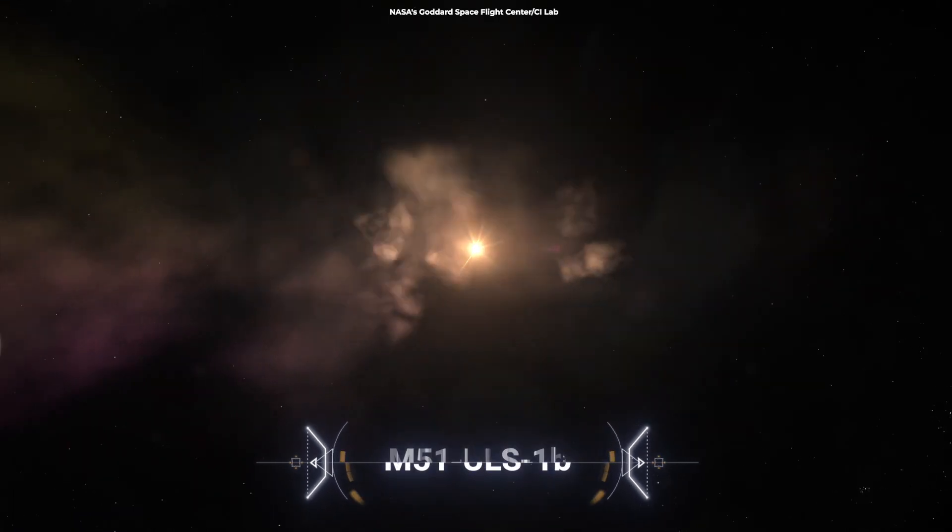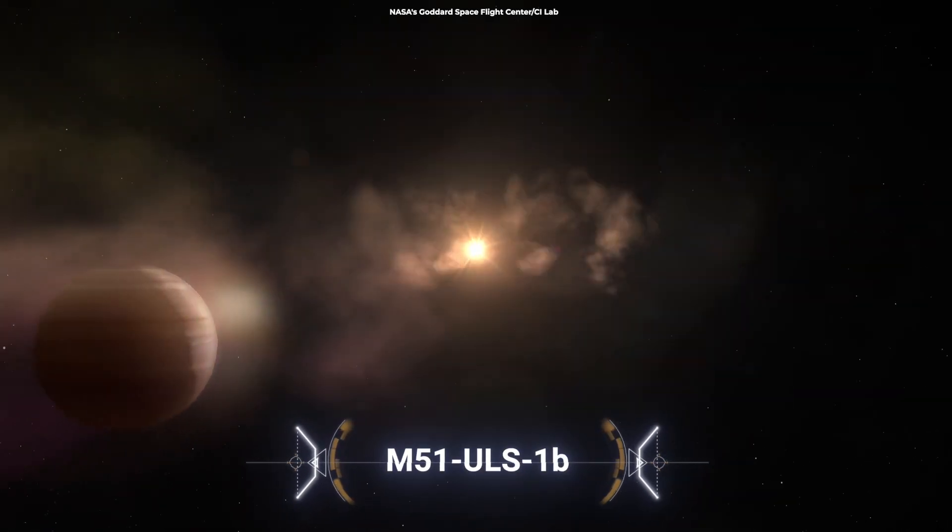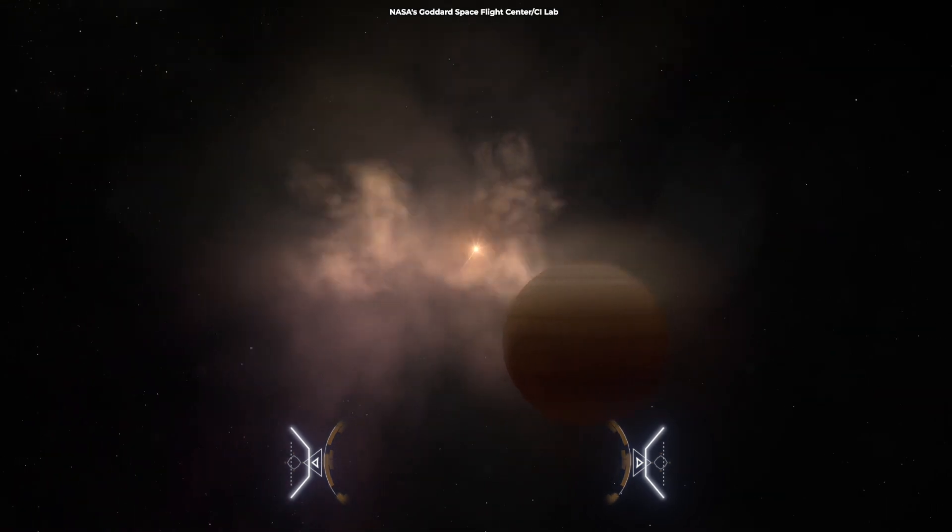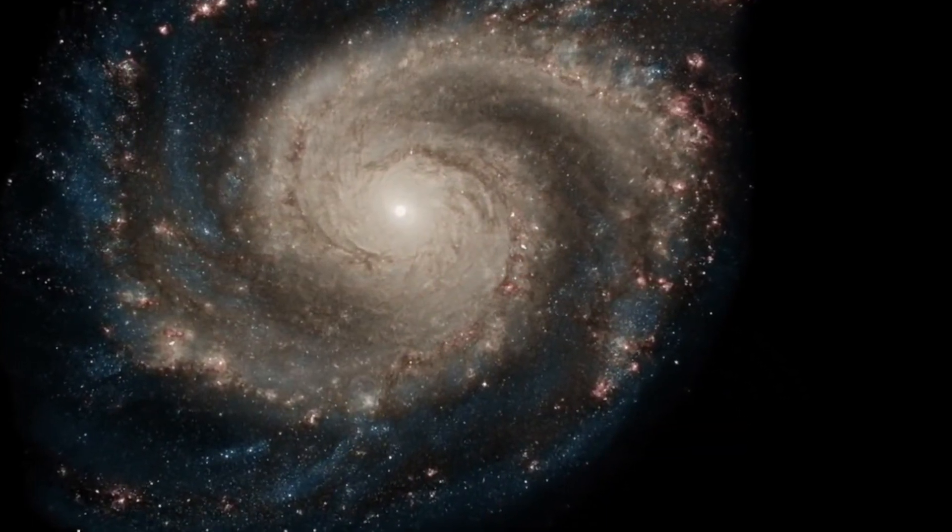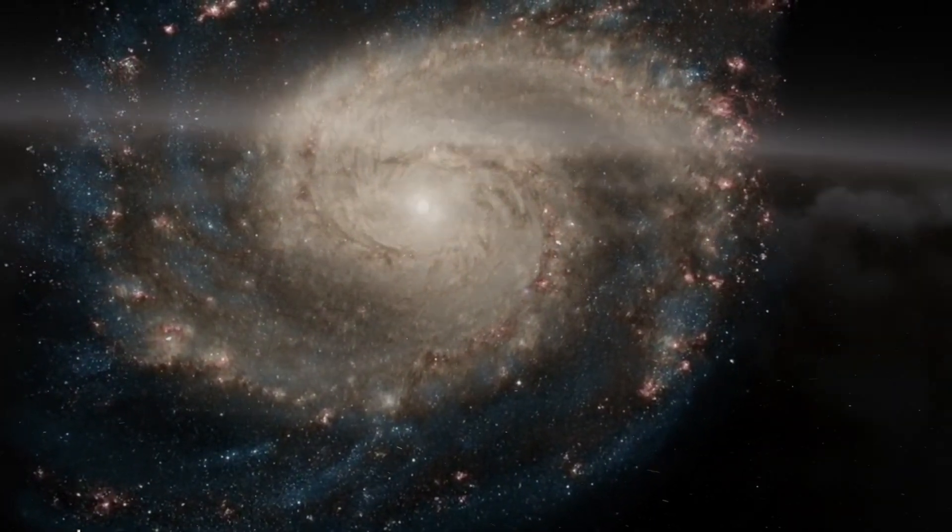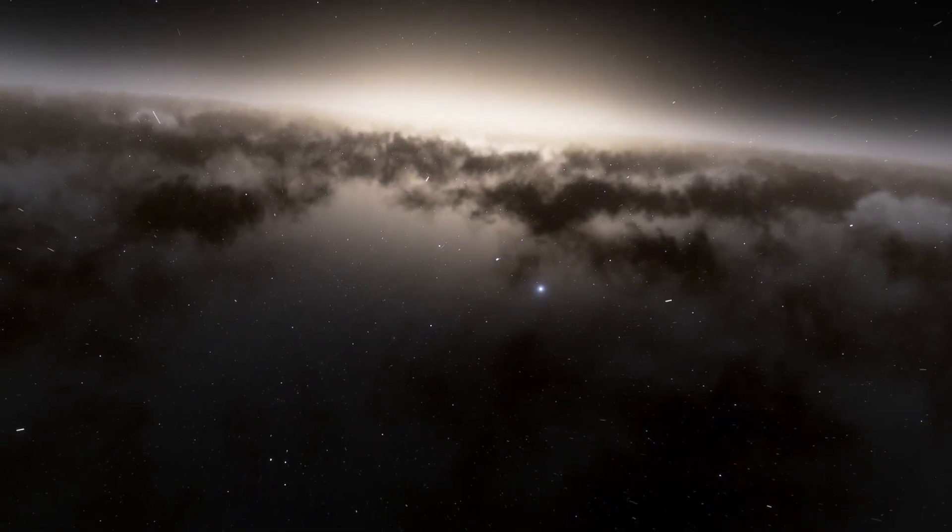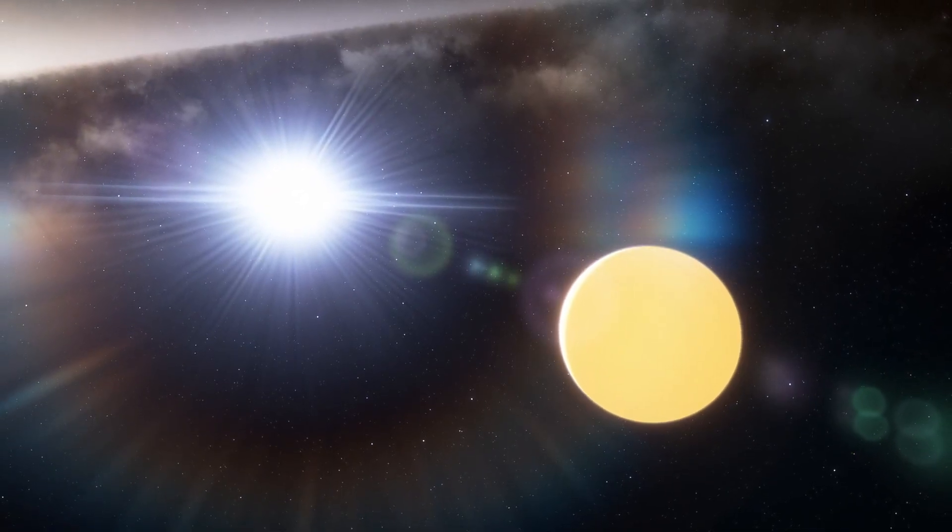The planet has been designated M51 ULS-1b and lies within the Whirlpool Galaxy, an unfathomable 31 million light-years away. Strange as it is to simply see a planet so impossibly far from home, the M51 ULS-1 planetary system is bizarre in its own right.